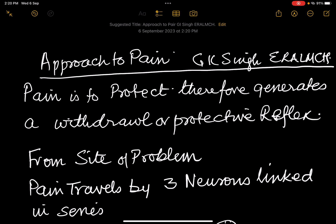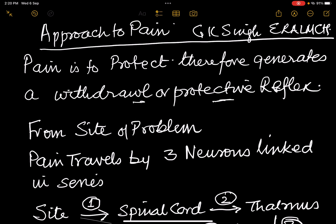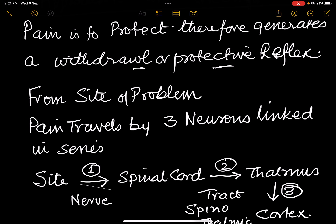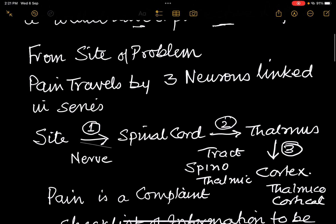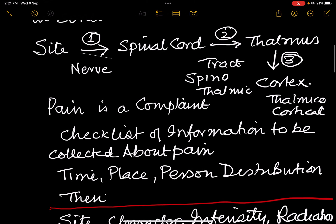Let us approach pain today. Metatarsalgia is a type of pain. Pain is to protect, and therefore generates a withdrawal or a protective reflex — you protect the site of problem by the protective reflex. Pain travels by three neurons: from the site to the spinal cord by the nerve, from the spinal cord to the thalamus by the spinothalamic tract, and from the thalamus to the cortex by the thalamocortical tract.